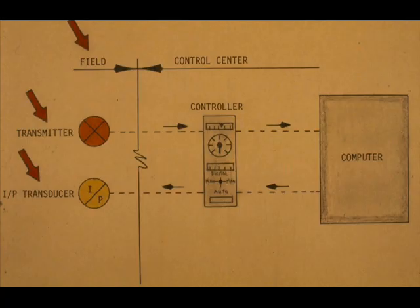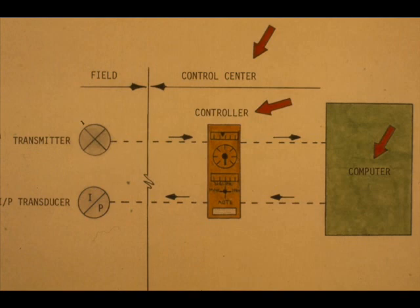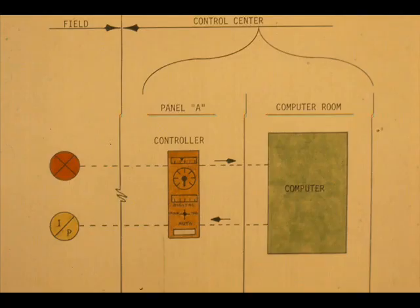Let's examine an electronic instrument loop in more detail. Notice that the transmitter and I to P transducer are located in the field. The controller and computer are located in the control center. The controller is located in panel A. The computer is located in the computer room.